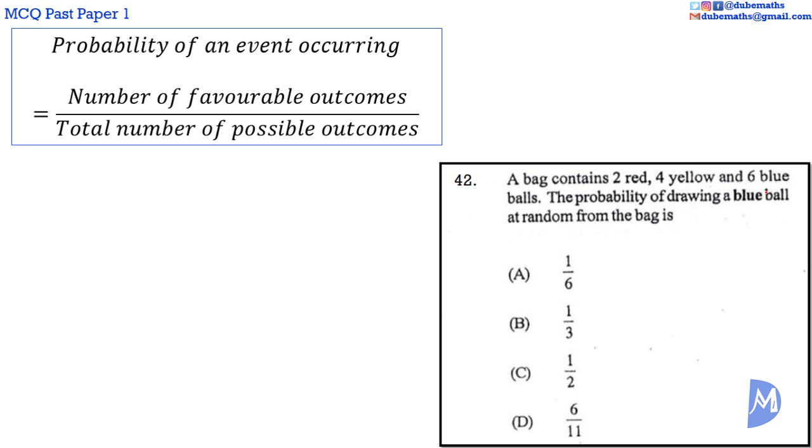There are 6 blue balls. So there are 6 ways we can have a favourable outcome. The total number of possible outcomes is equal to the total number of balls. We can draw any of the balls. The total number of balls is equal to 2 plus 4 plus 6, which is equal to 12. The total number of possible outcomes equals 12.